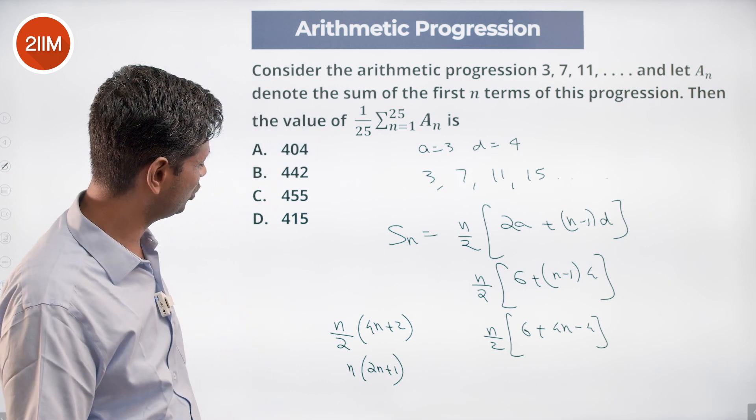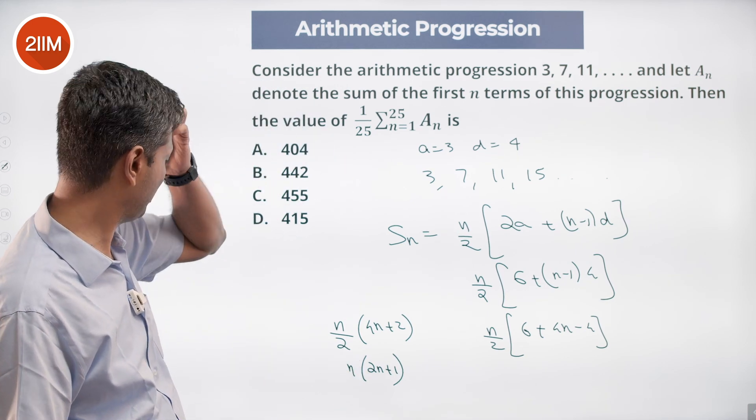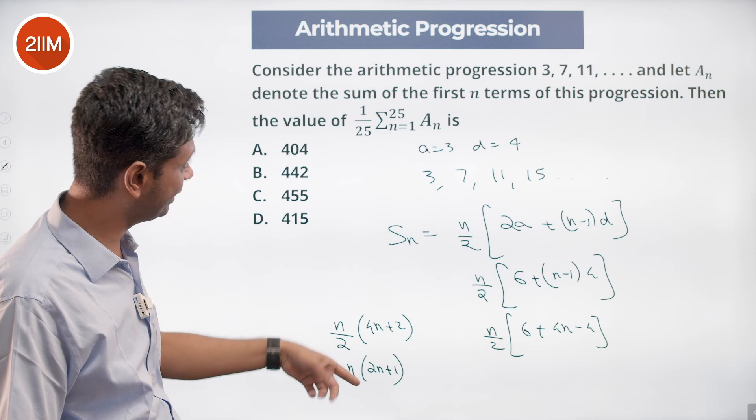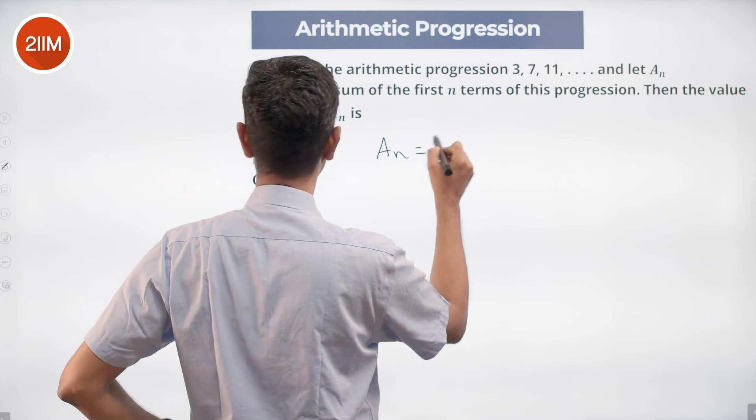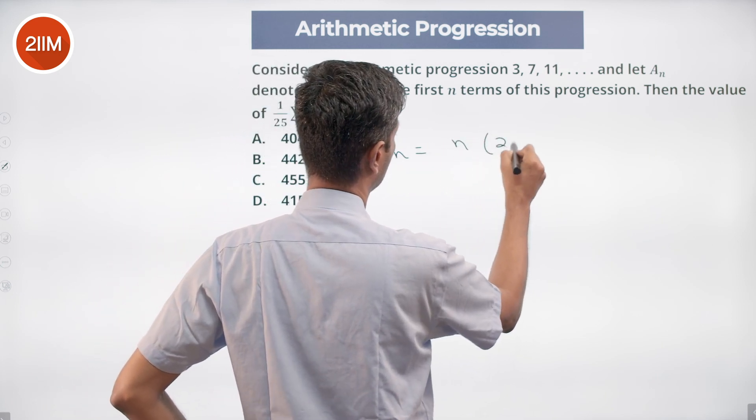When n is 1, this is 1 into 3, which is 3. When n is 2, this is 2 into 5, which is 10. That works. So a_n is n times 2n plus 1.